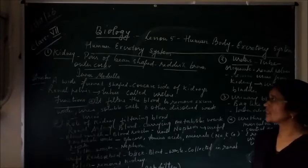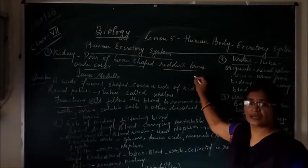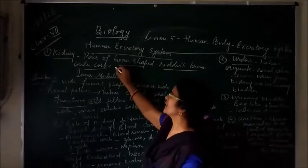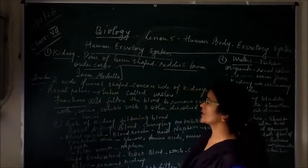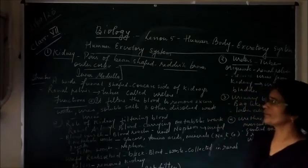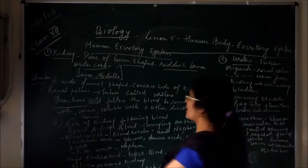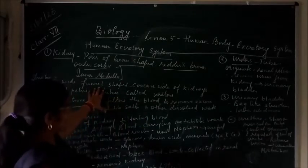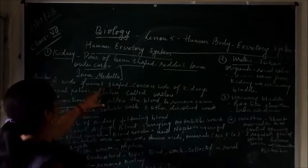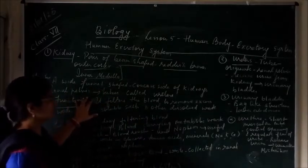We all know that in our body there is a pair of bean-shaped kidneys which are reddish brown in color. Now we will study the structure of the kidney. It is made of two parts: the outer cortex and the inner medulla.